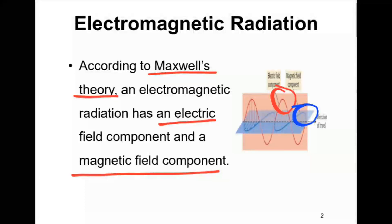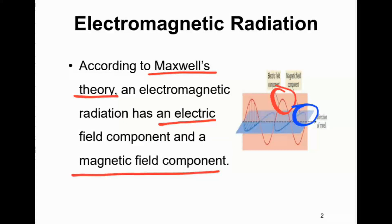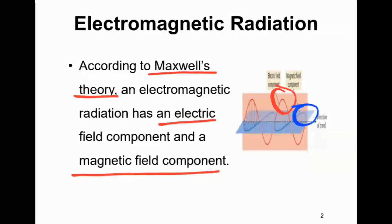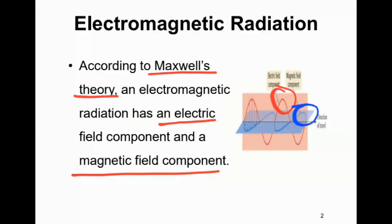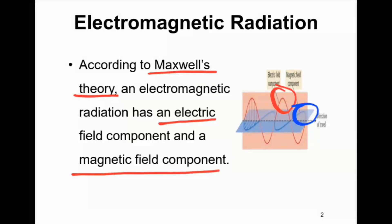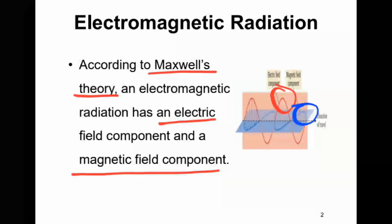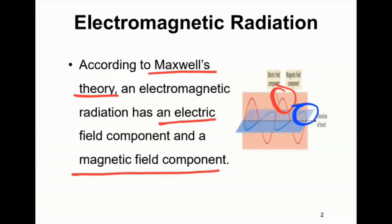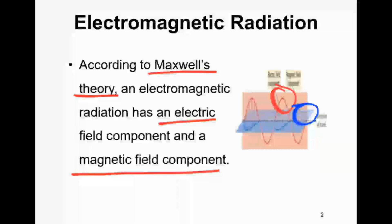And you have to remember these fields are perpendicular to each other. The electric field and the magnetic field are perpendicular. So the wave-like properties of electromagnetic radiation is due to the periodic or regular oscillation of electric and magnetic fields.